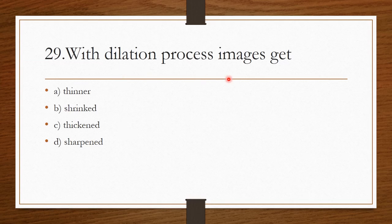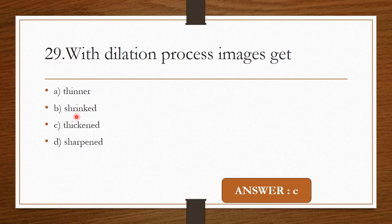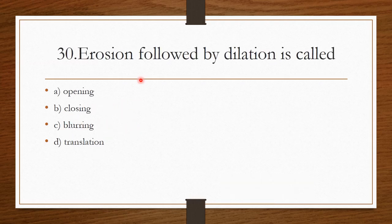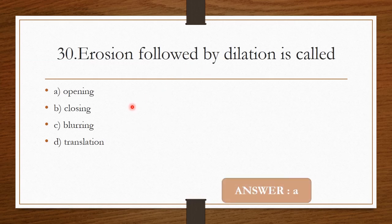Question 28: With the dilation process, images get — thinner, shrink, thickened, or sharpened. With dilation the images get thickened. Option C is the correct answer. Question 29: Erosion followed by dilation is called — Opening. Erosion followed by dilation is called opening.